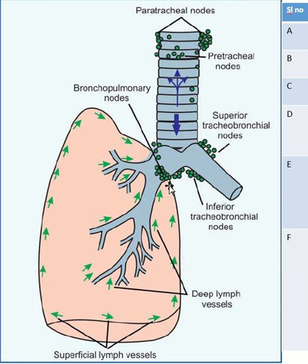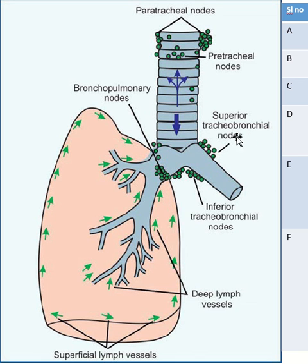From the bronchopulmonary nodes, this lymph spreads into other parts of the bronchopulmonary node, and also the inferior tracheobronchial node, superior tracheobronchial node, pretracheal node, and paratracheal node.